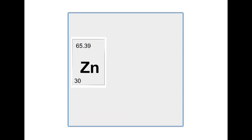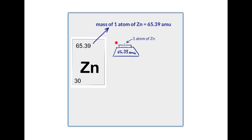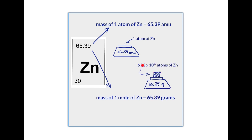Here is something we need to know for future calculations. On the periodic table, the average atomic mass reported for every element plays two roles. When expressed in atomic mass units, that number reports the mass of a single atom — for example, a single atom of zinc weighs 65.39 atomic mass units. When expressed in grams, that number reports the mass of one mole of atoms of that element. If we put a mole of zinc atoms on a scale, it will show 65.39 grams. This dual meaning applies to all elements on the periodic table.